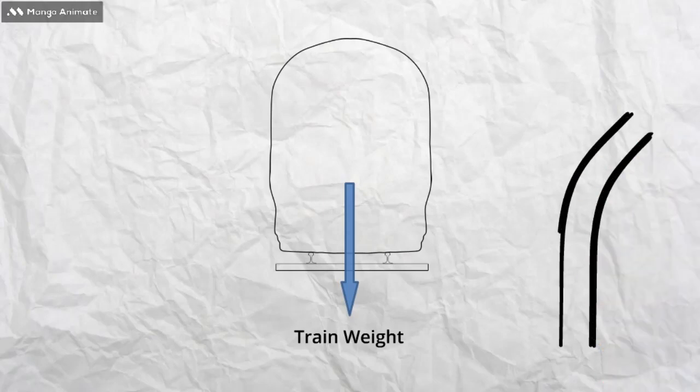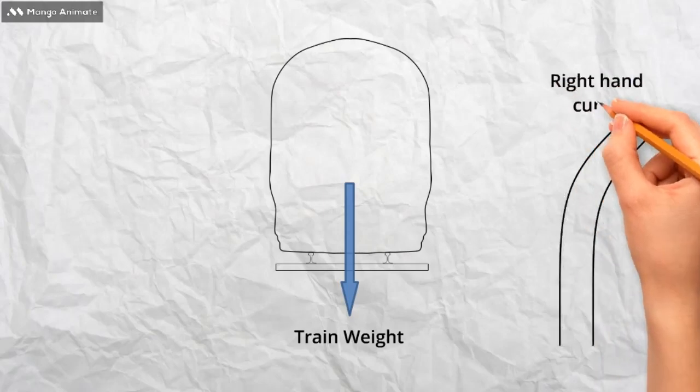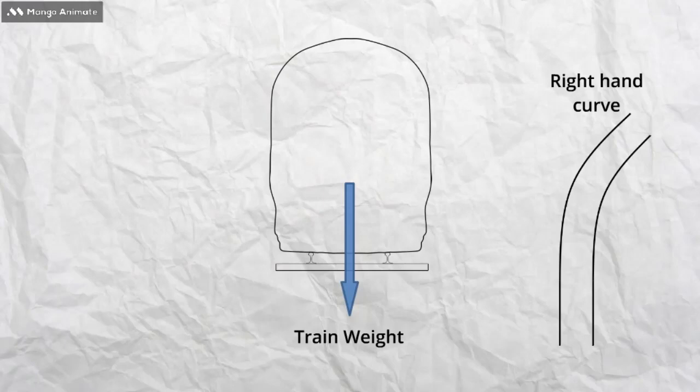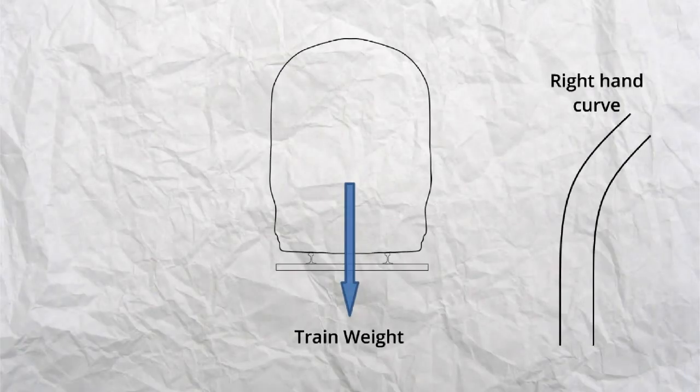However, when a train is traveling on a curve, there is an outward force. This is called centrifugal force. If you are in a car that goes around a corner quickly, and you feel the car roll outwards, with you yourself feeling pushed sideways, this is because of centrifugal force.